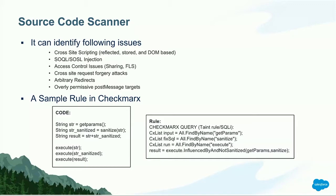It can identify cross-site scripting, SOQL injection, access control issues, cross-site request forgery, arbitrary redirect, and overly permissive postMessage targets. We are continuously updating CheckMarx rules in the background, so you could do a yearly review to make sure you comply with our new security rules. If you're doing large-scale development, you can contact CheckMarx, get a license, and add your own rules.